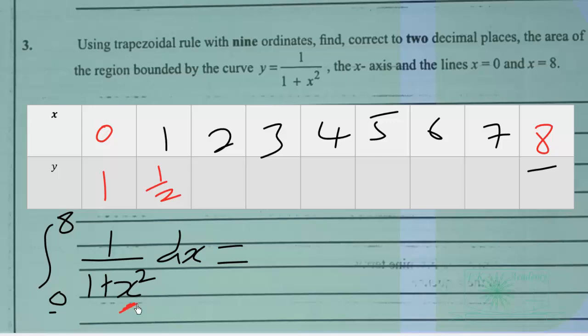I square 2, get 4 plus 1 is 5, so 1 over 5. Then 1 over 3 squared plus 1, which is 1 over 10. 4 squared plus 1, 1 over 17. 5 squared plus 1, 1 over 26. 6 squared plus 1, 1 over 37. 7 squared plus 1, 1 over 50. 8 squared plus 1, 1 over 65.